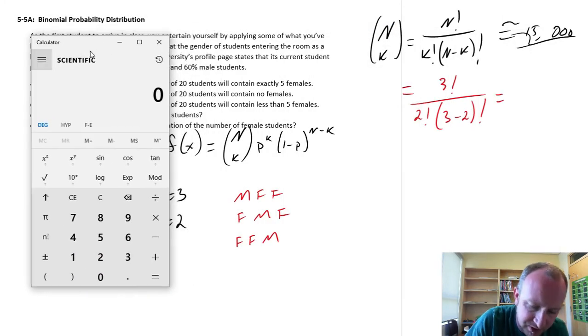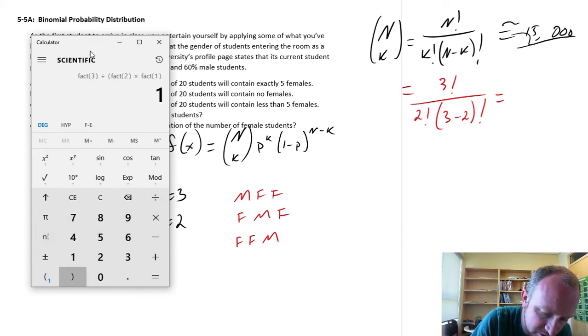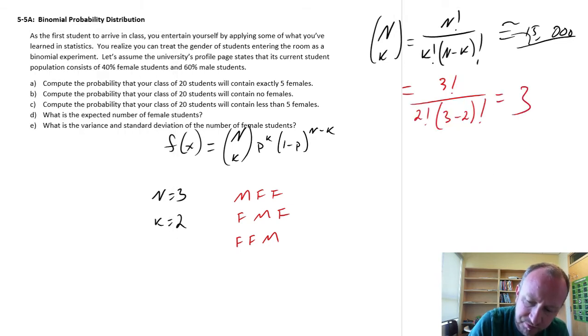Just move this out of the way. So in the numerator I have 3 factorial divided by 2 factorial times 1 factorial. So this gives me a value of 3.